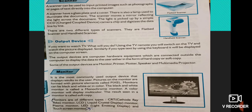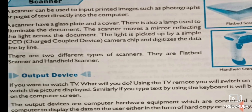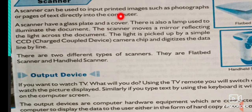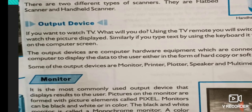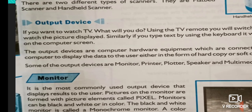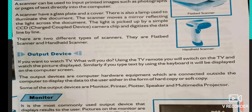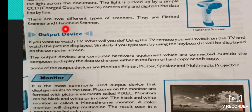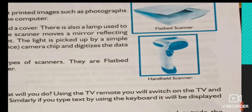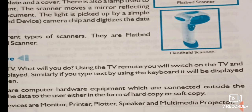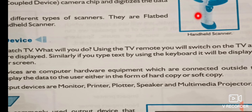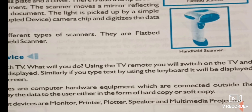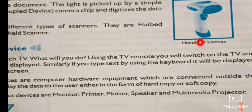The last input device covered in your textbook is the scanner. A scanner is an input device used to scan photographs or any pages of text directly into the computer. There are two types of scanners — the flatbed scanner and the handheld scanner. You can see both in your textbook. The handheld scanner is similar to what you have seen used in supermarkets at the billing section.